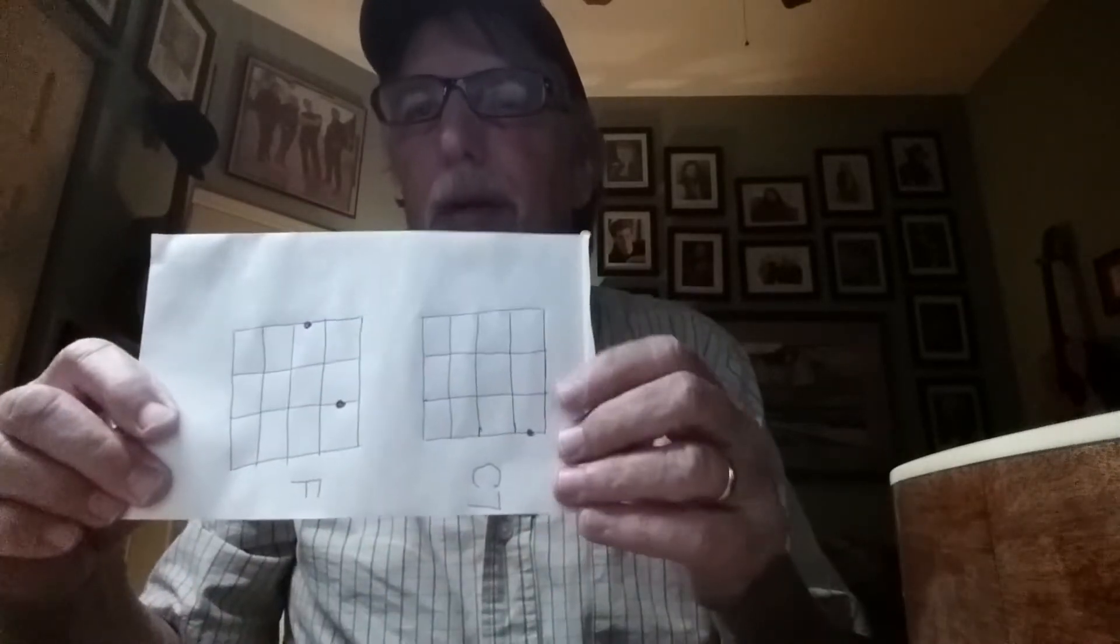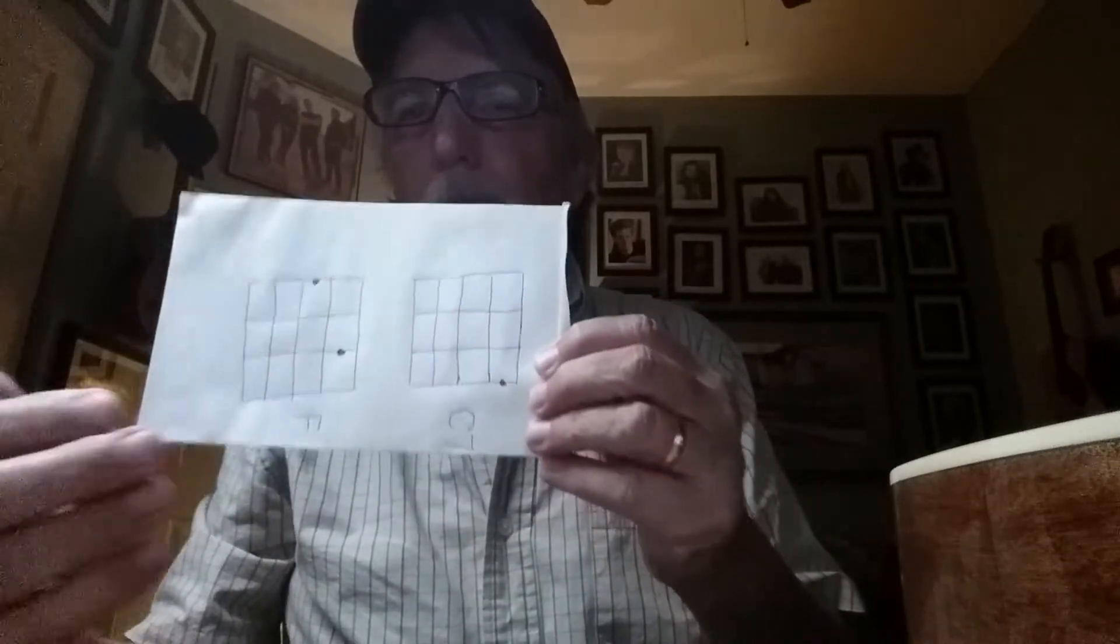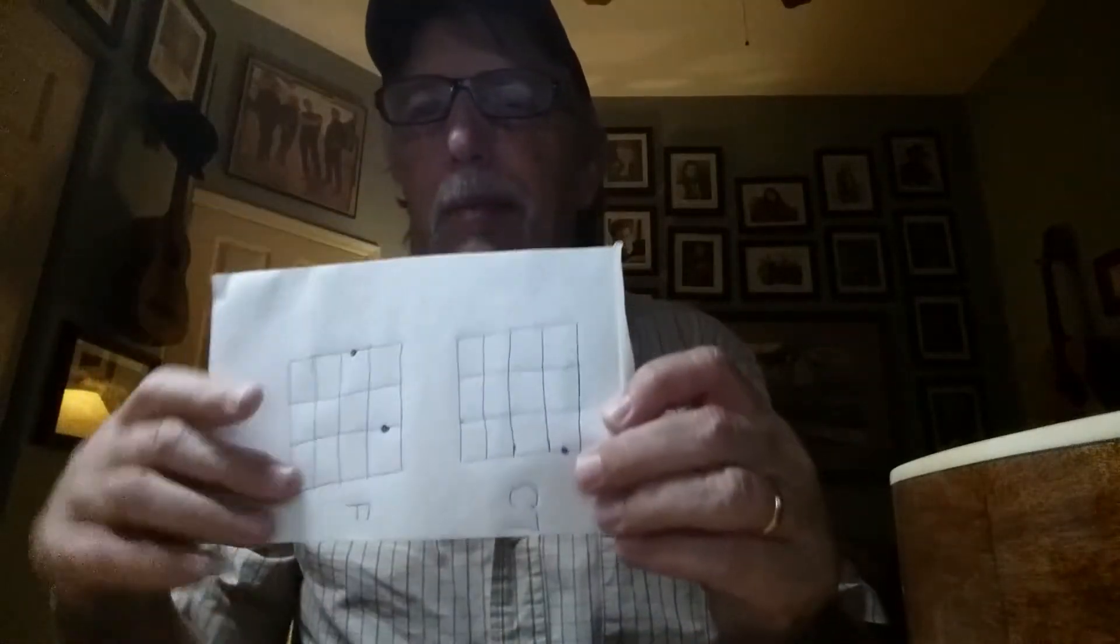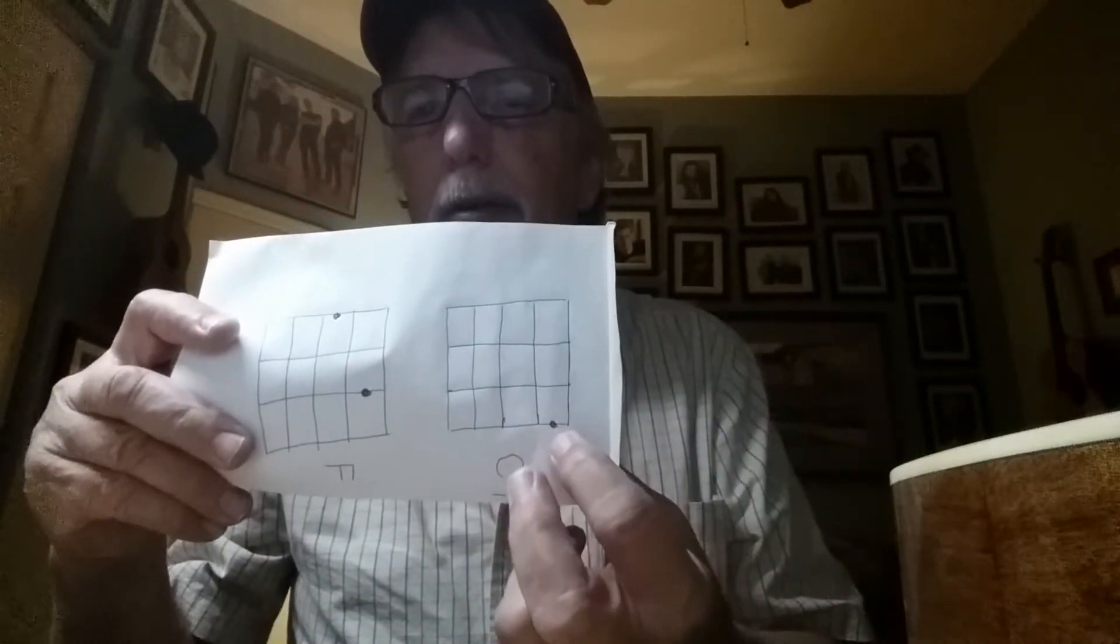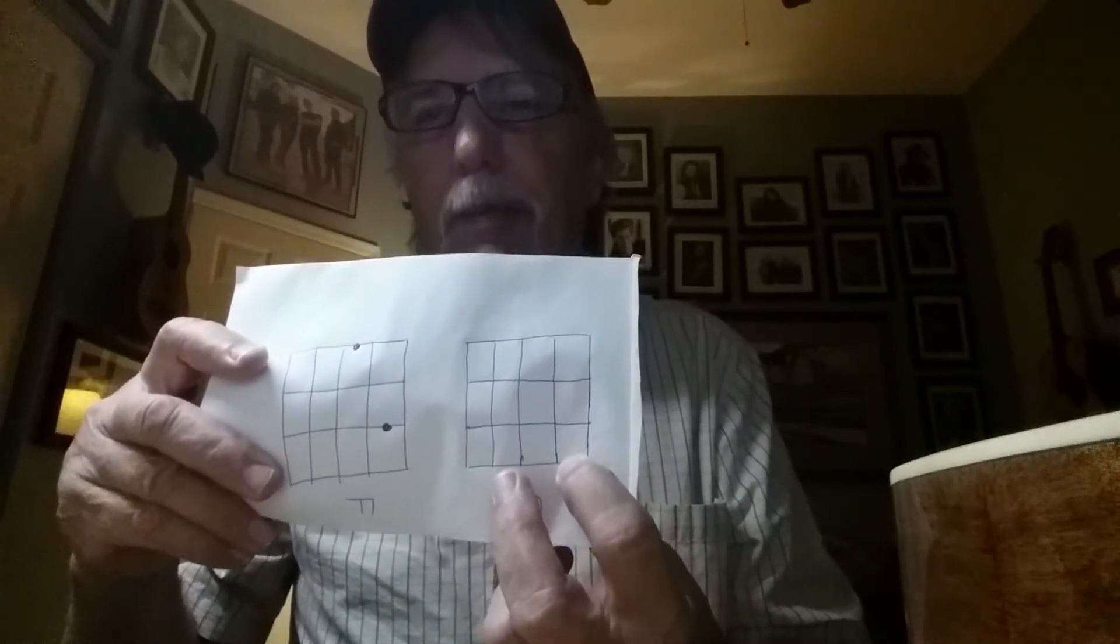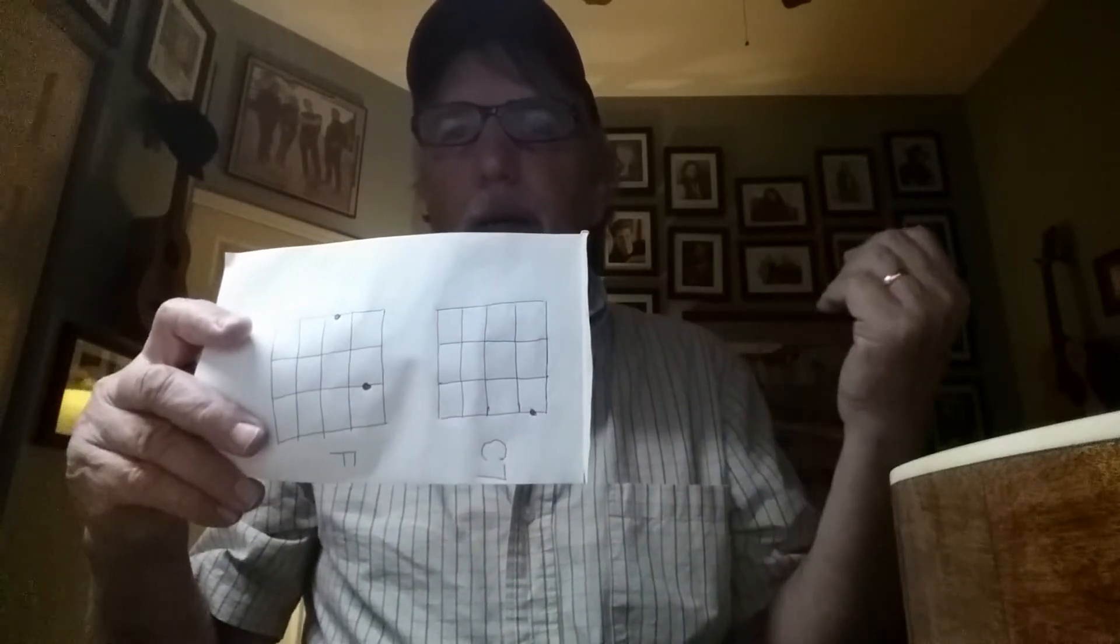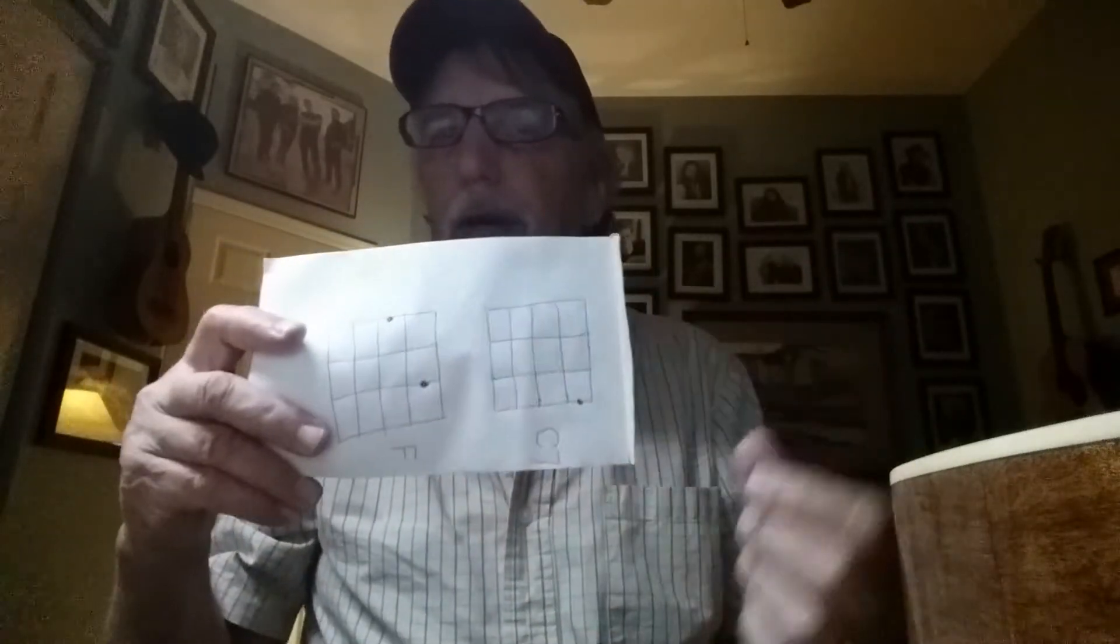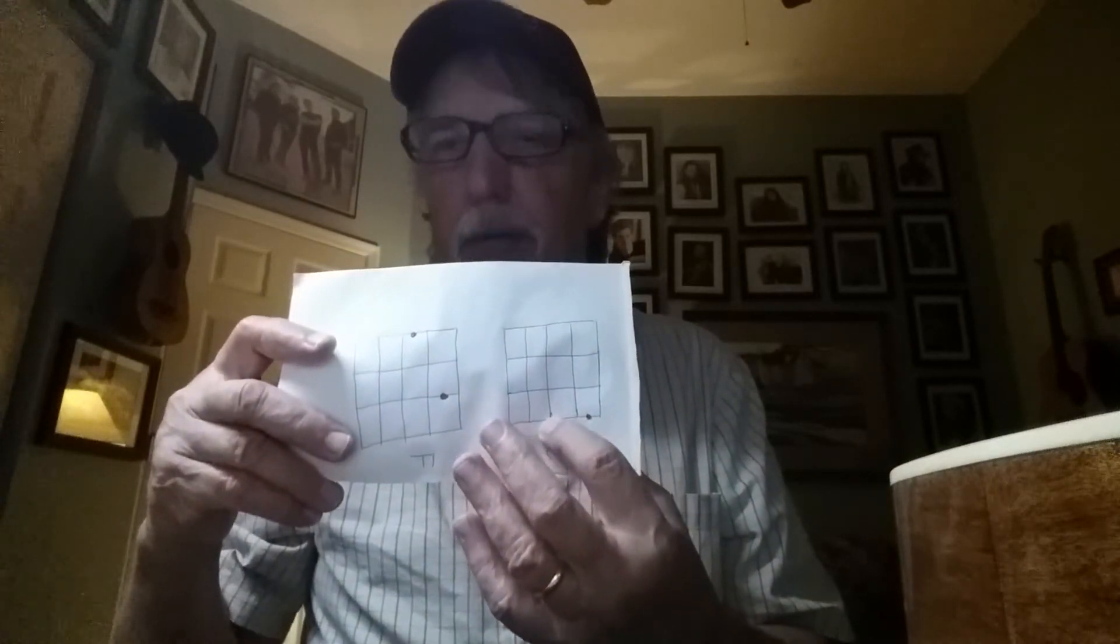And the big deal is where the dots are. The dots indicate where you want to put a finger. So in this case, this is a C7 chord, and the dot says you need to put a finger on the first fret, first string.